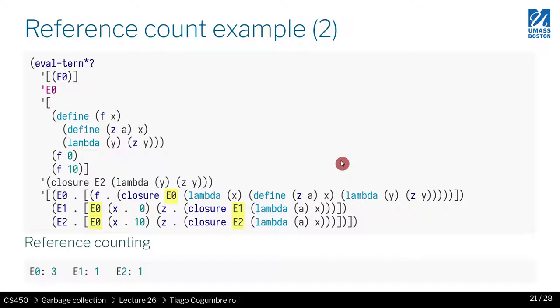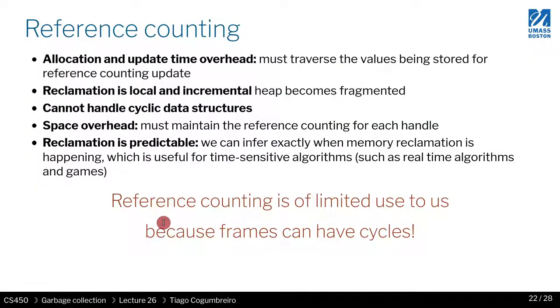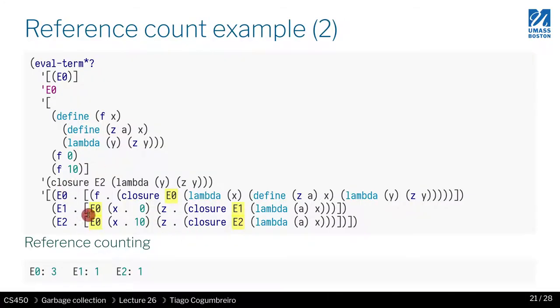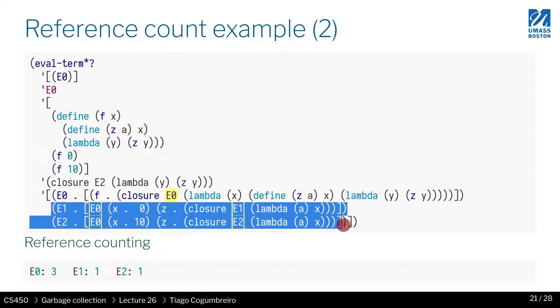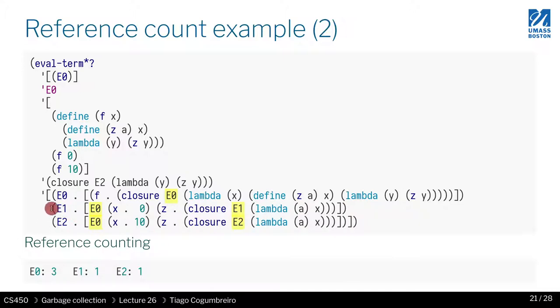So here's another example. E2 refers to E2. So it's being used once. E1 on the right-hand side is being used once. E0 is being 1, 2, 3, 3 times. So we have all the reference counting here, which means that we could never reclaim any of this data. But in fact, we know that E1 and E2 is not being used anywhere because when I call this function, these two things are never used again. So E1 just points to itself.